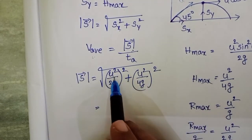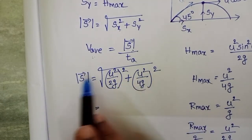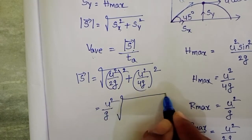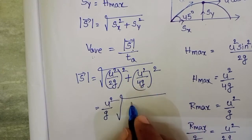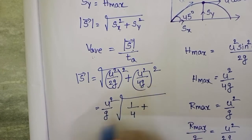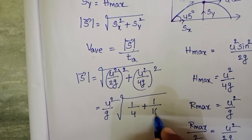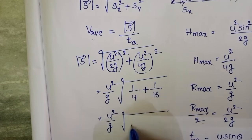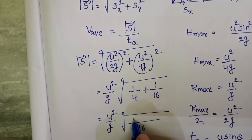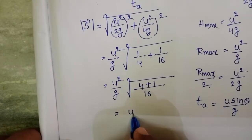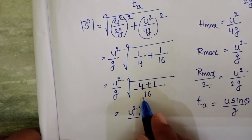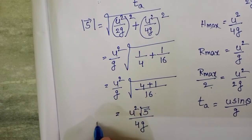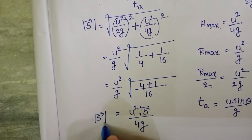Taking u²/g common out of the square root, we get (u²/g) · √[(1/2)² + (1/4)²] = (u²/g) · √[1/4 + 1/16]. With LCM 16, this becomes (u²/g) · √(5/16) = (u²/g) · (√5/4) = √5 · u²/(4g). This is the magnitude of displacement.